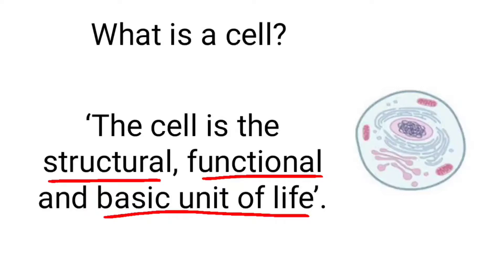What is the structure of the cell? All the structures of our body are made up of cells. For example, heart, kidney, liver, skin — these structures are all made up of cells. The cell is a functional unit because it performs all the functions of our body.